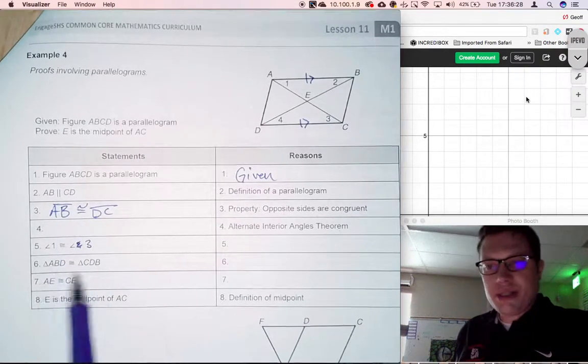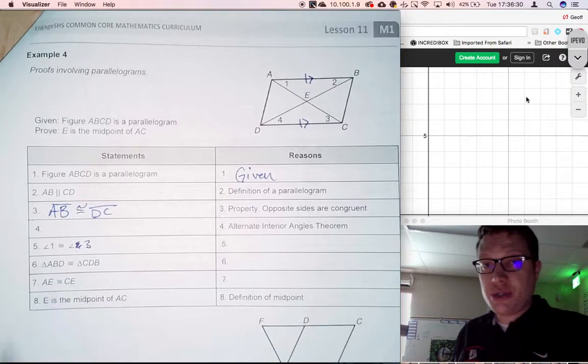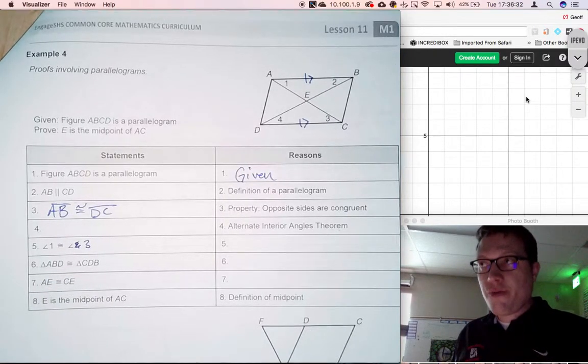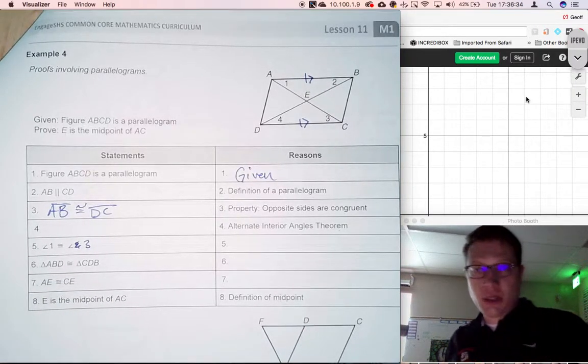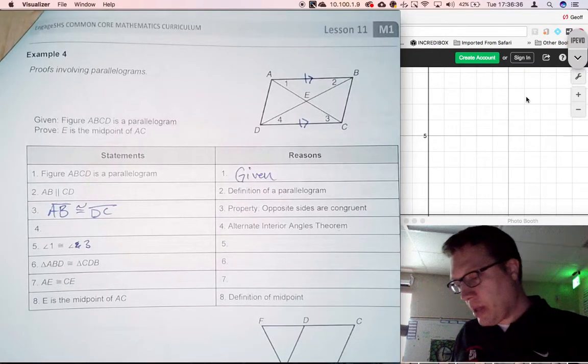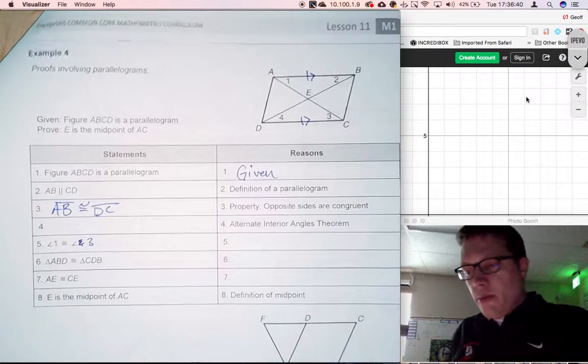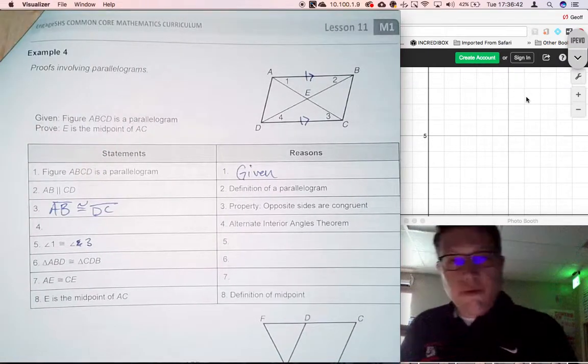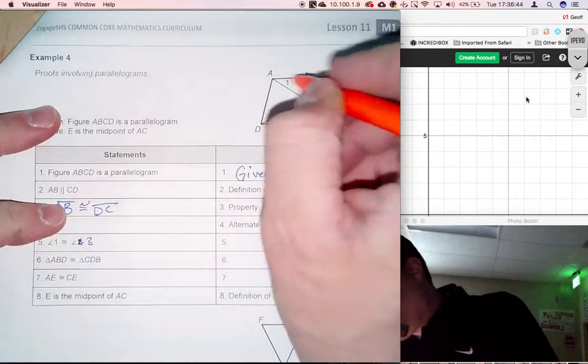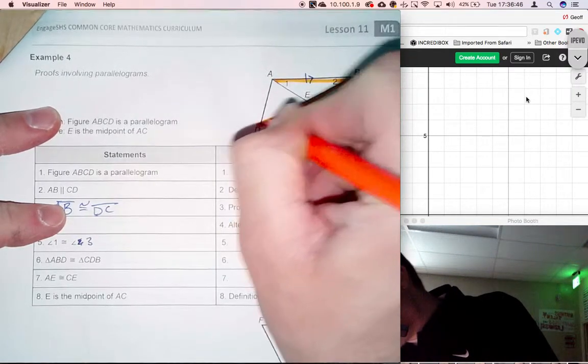Reading the rest of this statement, I realize number six says we have two triangles that are congruent. Well, there are four congruent shortcuts we're going to pick from. Reading on, Alternate Interior Angles Theorem. Remember, alternate interior angles mean look for a Z. So if I think about the Z shape this way,